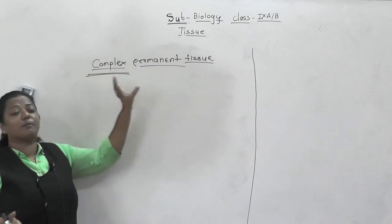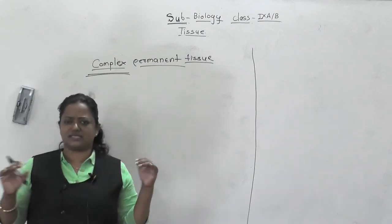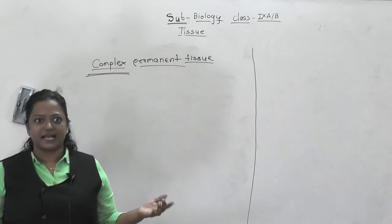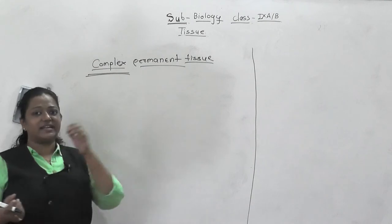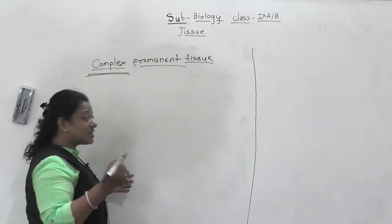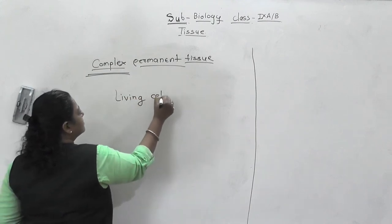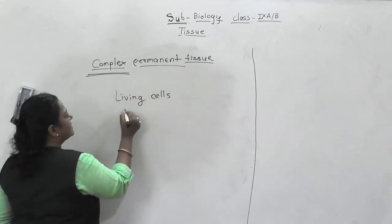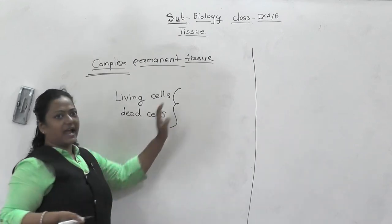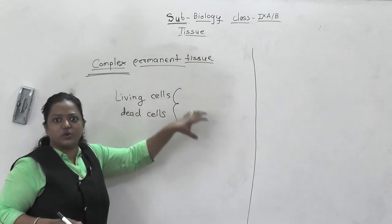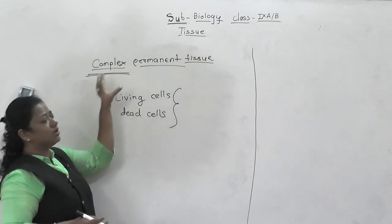Complex permanent tissue is actually made up of both kinds of cells - living cells are also there and dead cells are also there. So complex permanent tissue is a combination of living cells and dead cells. These living cells and dead cells work together to perform a specific function, which makes them complex.